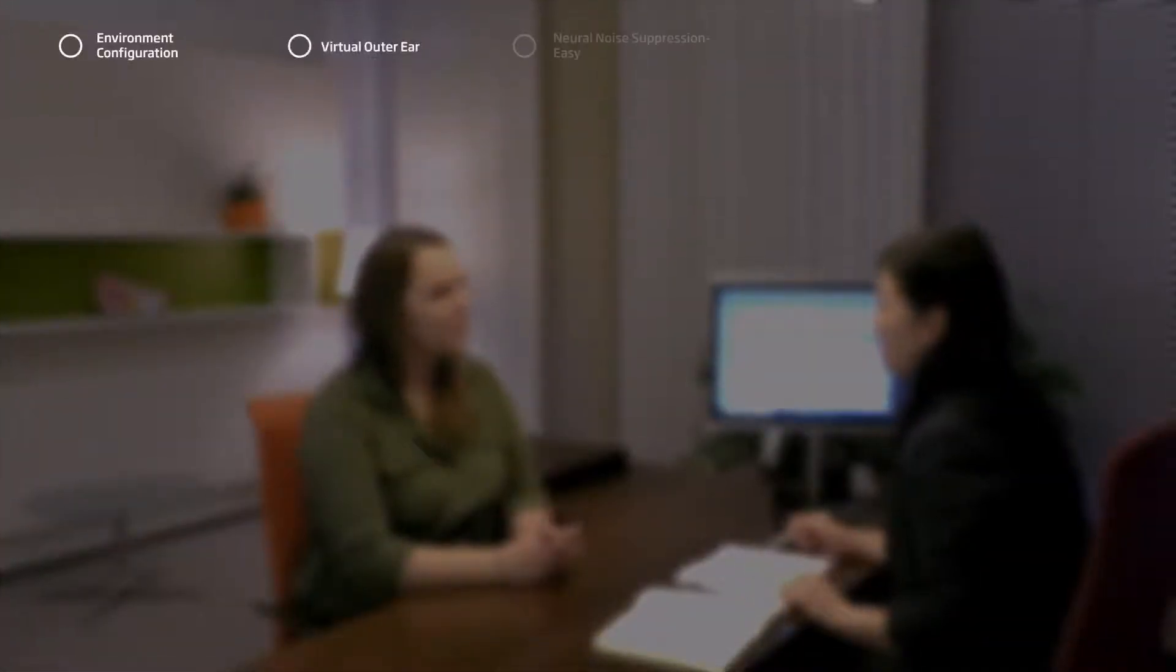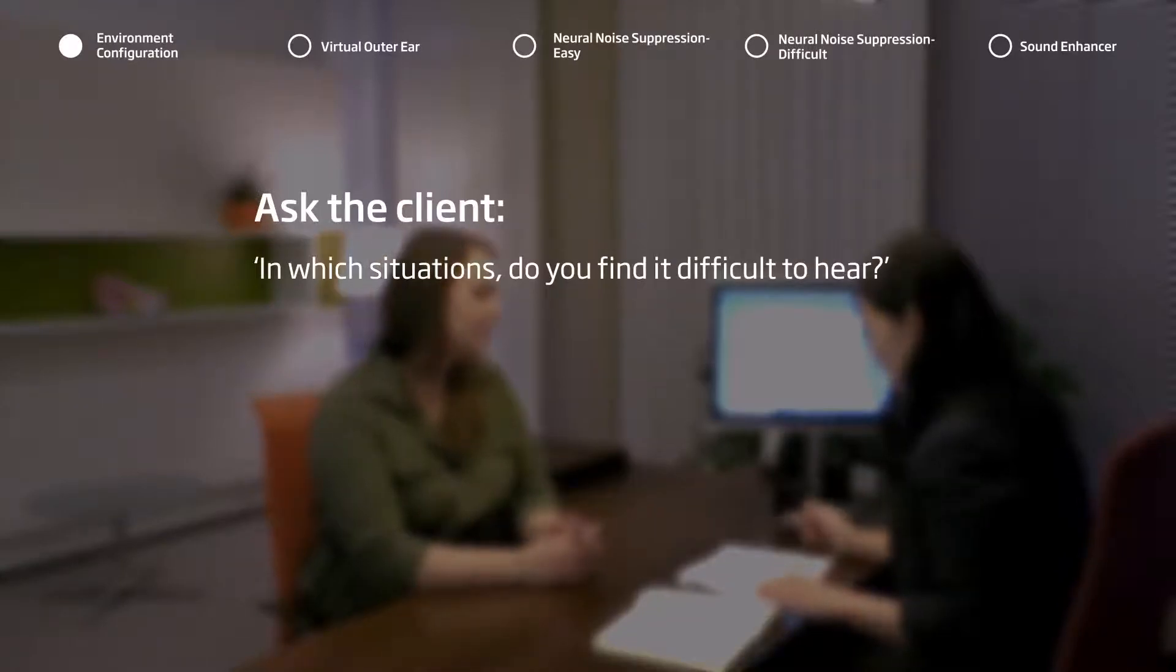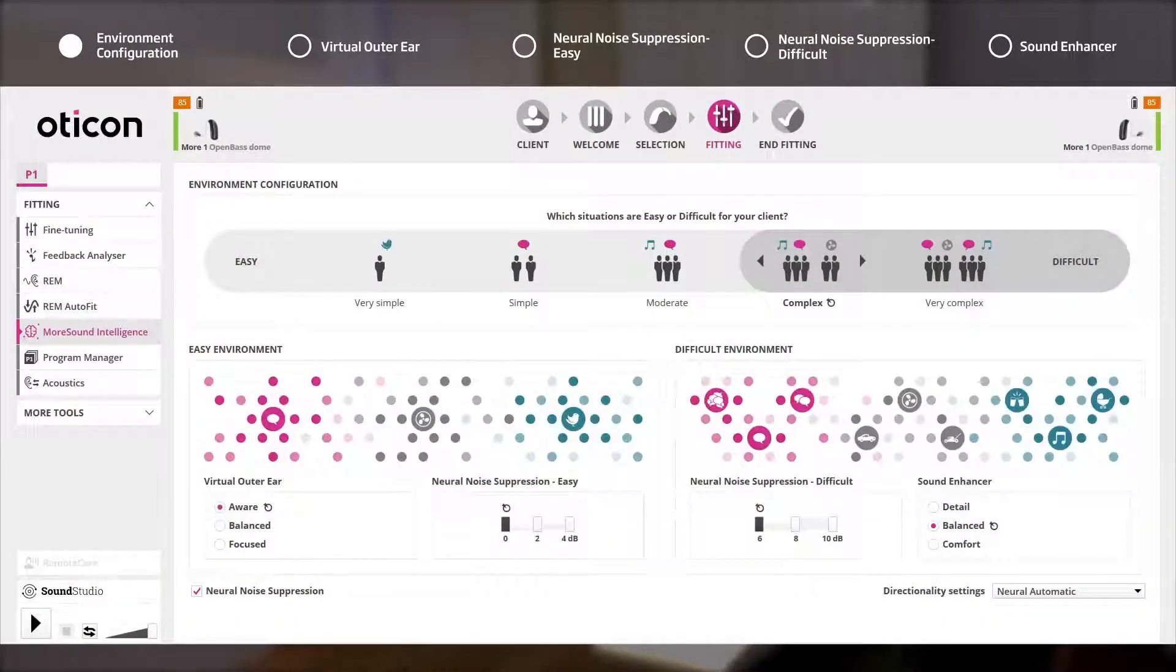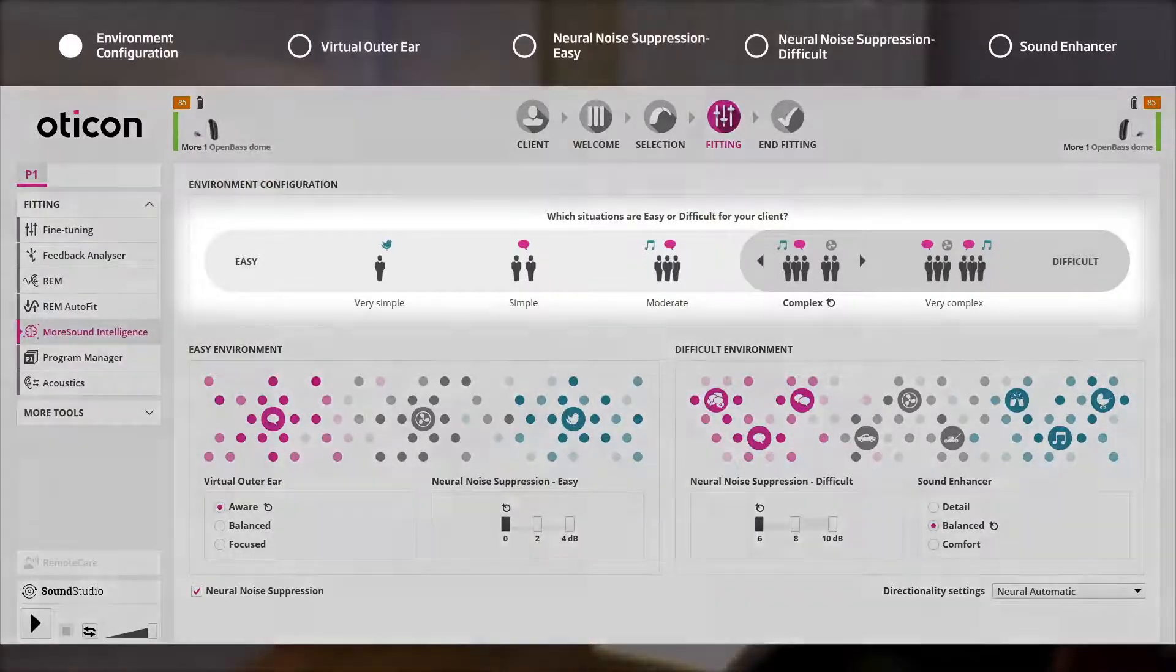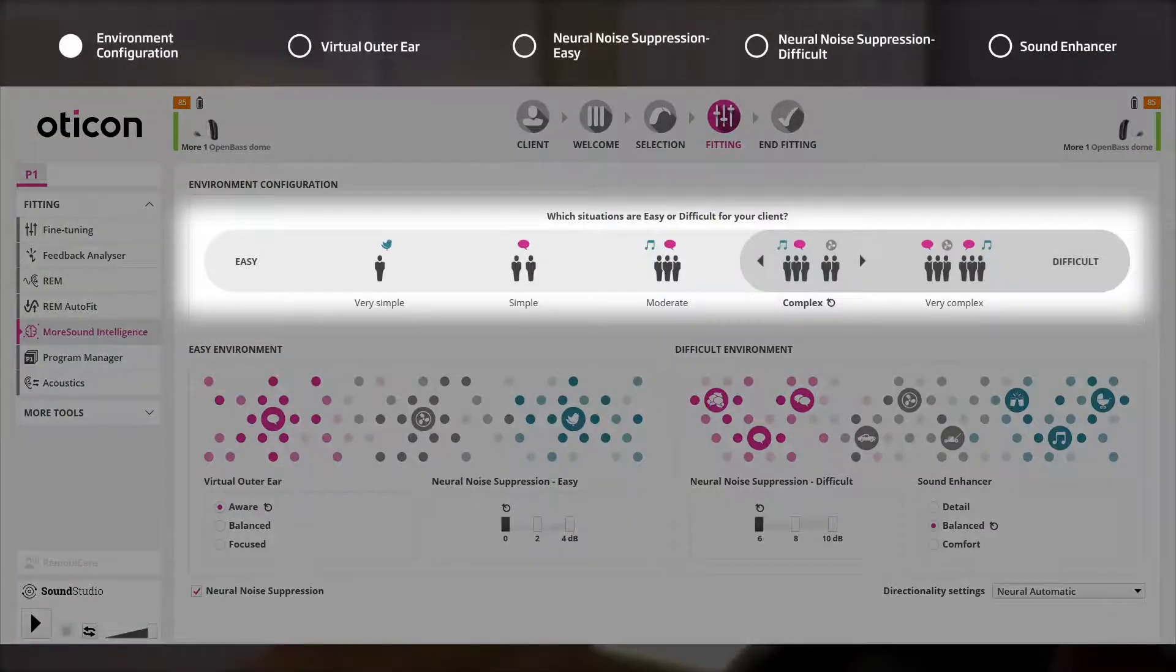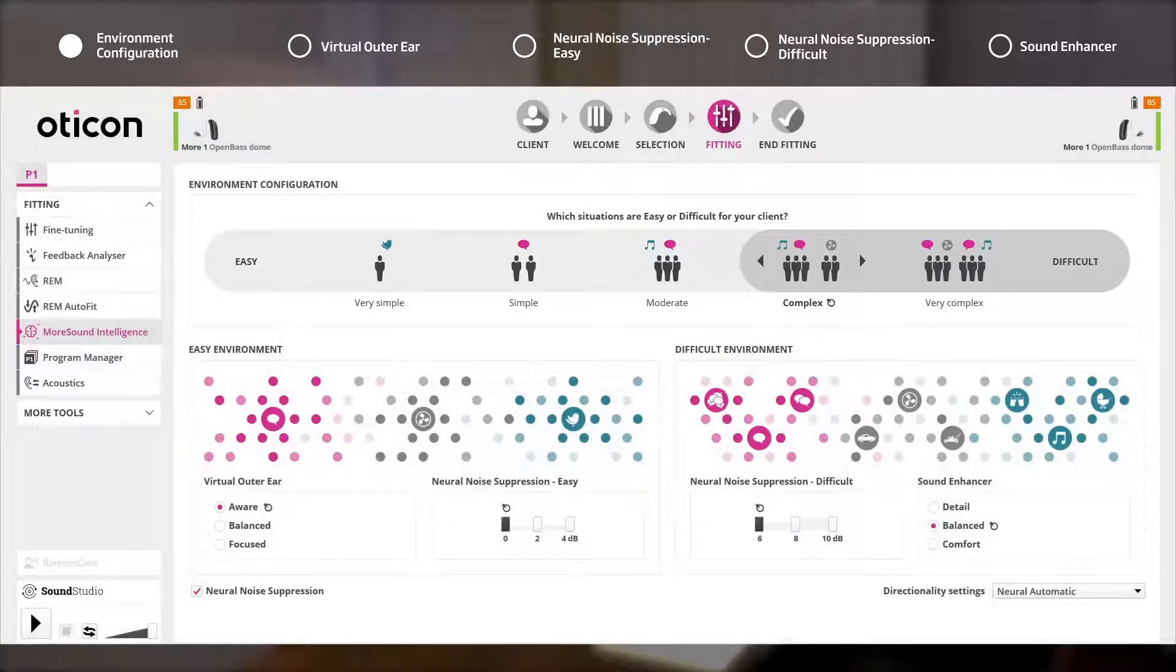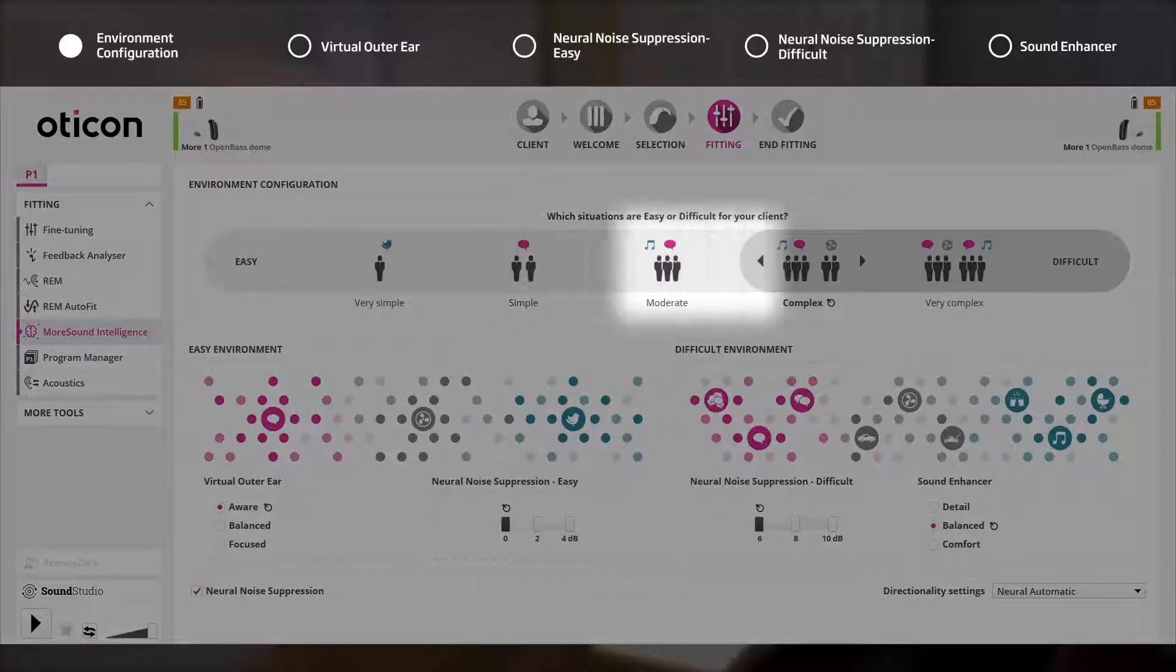There are five elements in the More Sound Intelligence fitting tool. As the difficulty a user experiences in hearing varies from individual to individual, Environment Configuration allows the hearing care professional to pinpoint exactly the kind of environment the user will begin to experience difficulty. This in turn will dictate how much help the user will get in different environments and the activation of automatics. Oticon recommends the hearing care professionals ask in which situations do you find it difficult to hear and go through each situation from very simple to very complex.